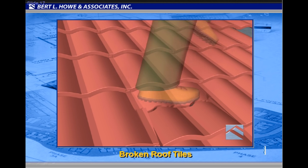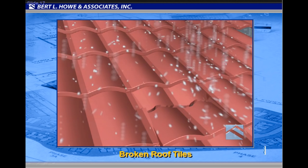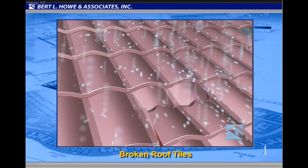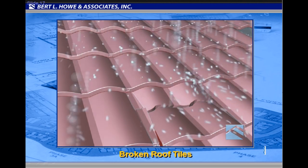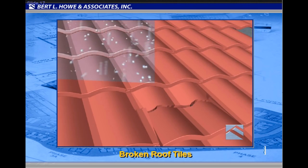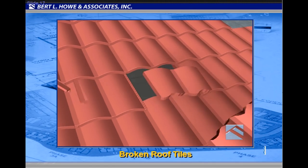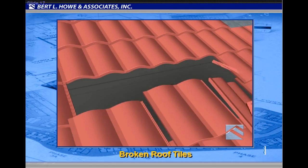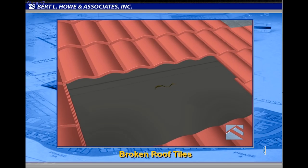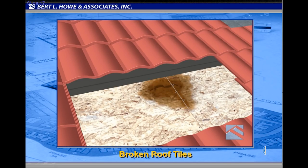Broken or otherwise damaged concrete or clay roof tiles are one of the most commonly alleged roofing deficiencies. Foot traffic or manufacturing defects can often lead to broken roof tiles. When these tiles become displaced, the underlying felt can be damaged and exposed to sun and weather. Over time, water then migrates below the roof felt and causes deterioration to the roof sheathing and framing members.